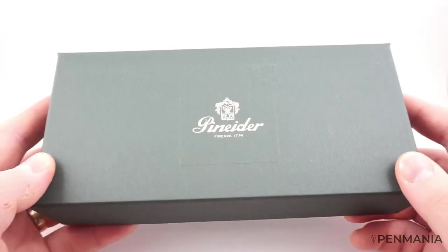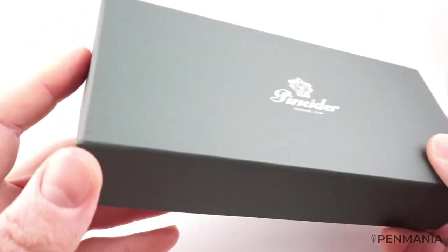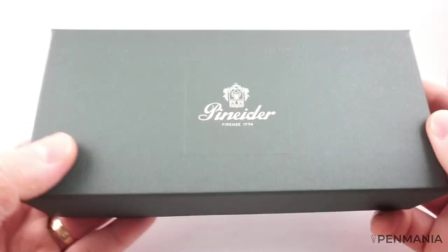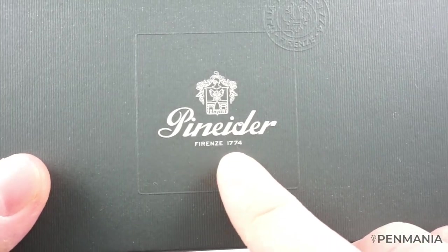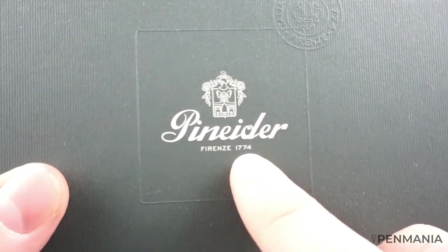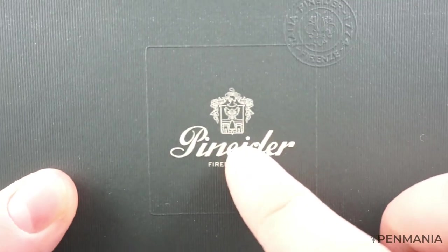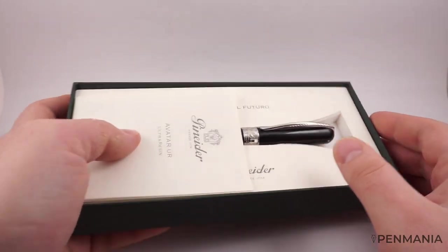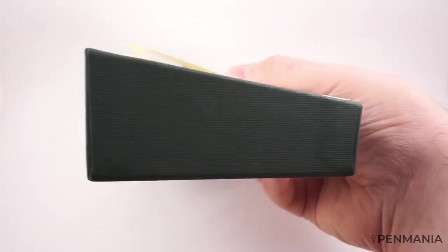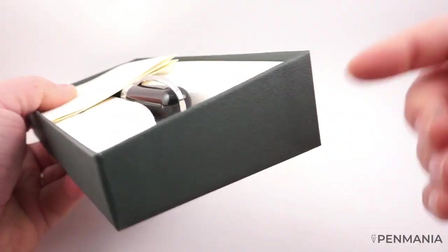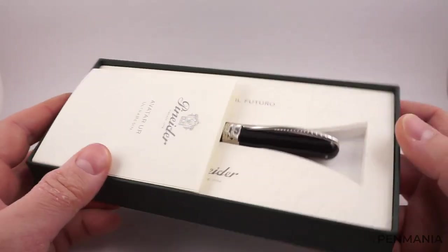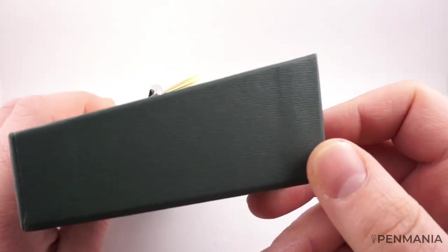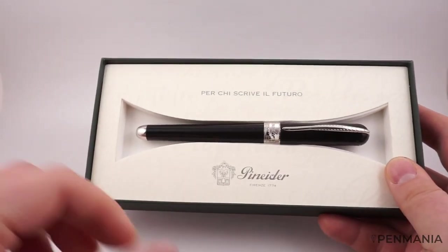This is the box that the pen comes with. It's a normal cardboard box. We have the Pinaider logo here, Firenze 1774, the nice emblem and logo on the box. We remove the cap. It's an interesting shape. I saw the previous generation of the Avatar had a more luxurious box, and this is probably to emulate an ancient pen stand or pen desk.